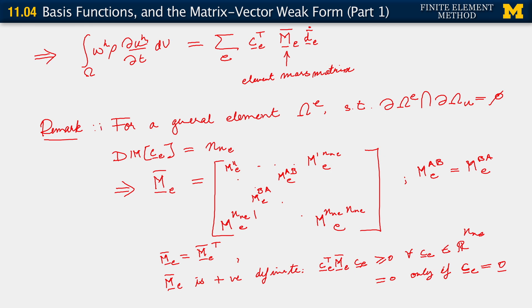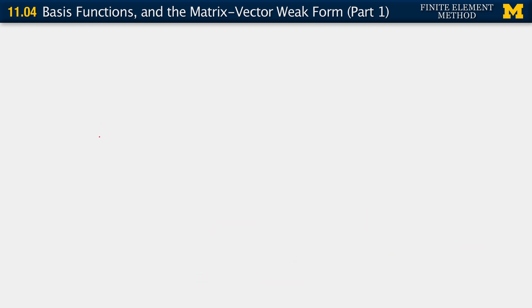So this is one remark about properties of the matrix. There is another remark which I'm going to make, which is that M bar as computed here is what we call the consistent mass matrix.